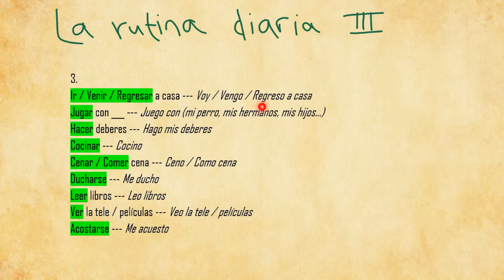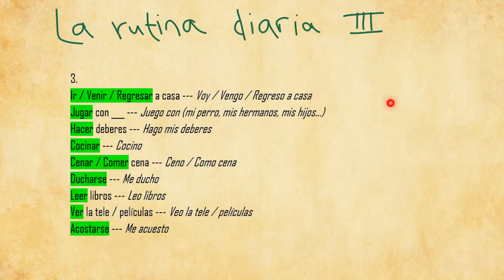So voy, vengo, or regreso a casa. 'To home' means a casa. So you can say: voy a casa, vengo a casa, or regreso a casa. And again you can add a time reference. Vengo a casa a las seis — I get back home at six o'clock.